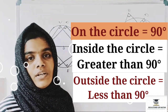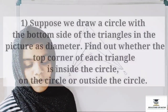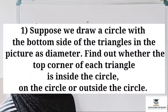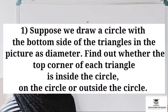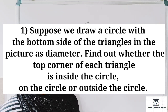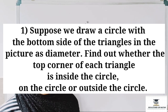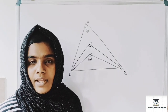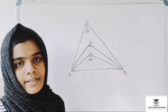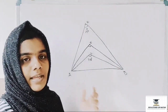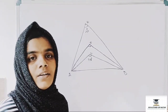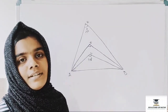Let's start page number 42. Suppose we draw a circle with the bottom side of the triangle as the diameter. Find out whether the top corner of each triangle is inside the circle, on the circle, or outside the circle.